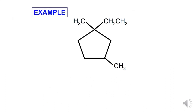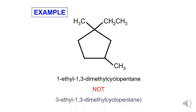Next example: for this structure, the IUPAC name is 1-ethyl-1,3-dimethylcyclohexane. Based on Step 3, give the lower set of numbers to each substituent group, so start numbering from the appropriate carbon.